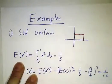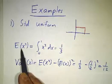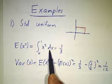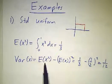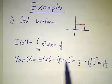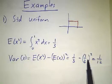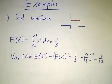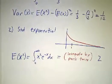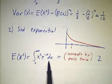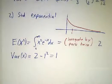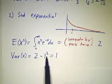For the standard uniform distribution, the average value of x squared means integrating x squared times f of x, which gives a third. The variance is the average of x squared minus the average squared, so it's a third minus a half squared — a third minus a quarter is a twelfth. For the standard exponential, you integrate x squared times e to the minus x dx, integrating by parts twice, and the answer is 2. Subtracting the average value of x squared gives a variance of 1.